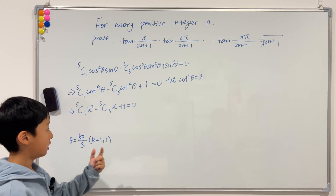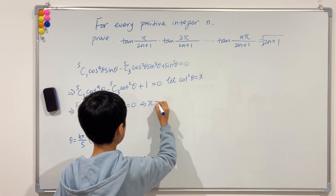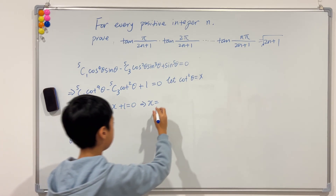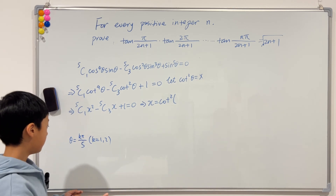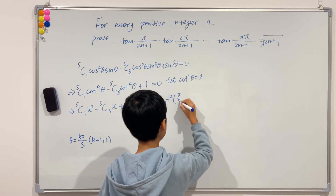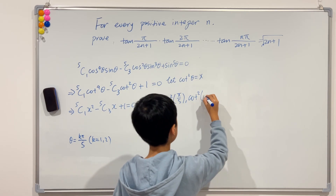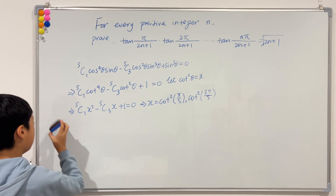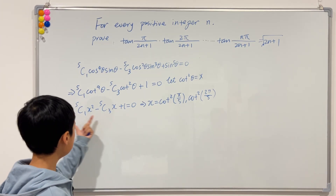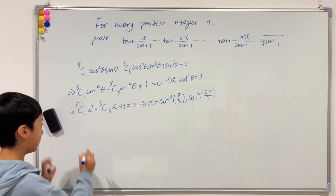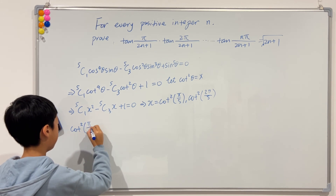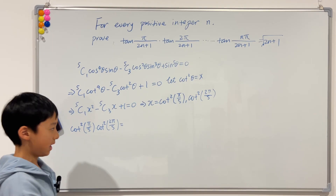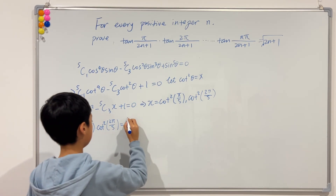This quadratic equation has two roots. Since x equals cotangent squared of theta, and theta equals k pi over 5, the two roots are x equals cotangent squared of pi over 5, and x equals cotangent squared of 2 pi over 5. How do we calculate the product of these two roots? Since these are roots of this quadratic, we use Vieta's formula. So cotangent squared of pi over 5 times cotangent squared of 2 pi over 5 equals c over a, which is 1 over 5.